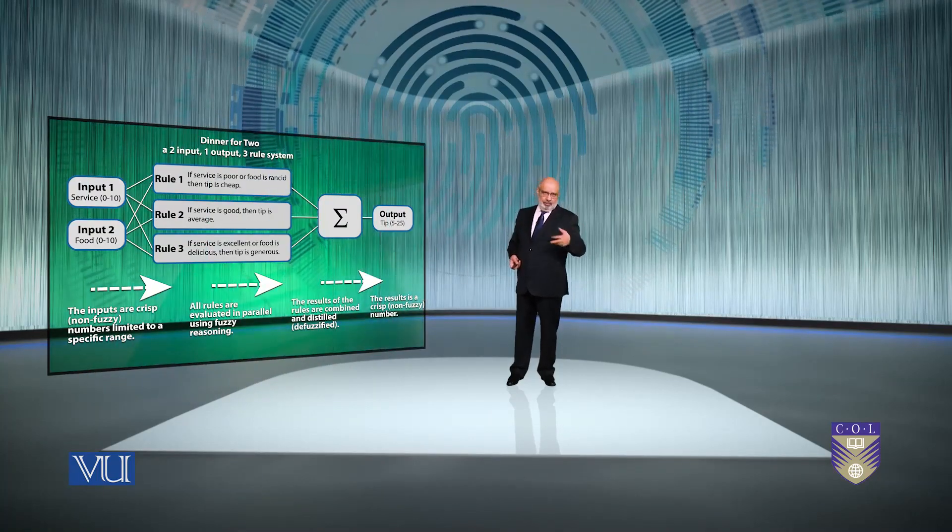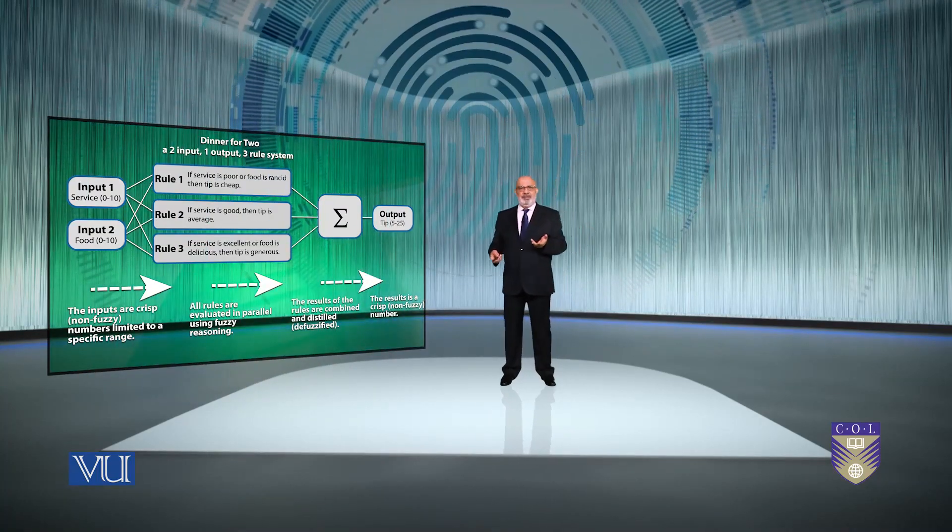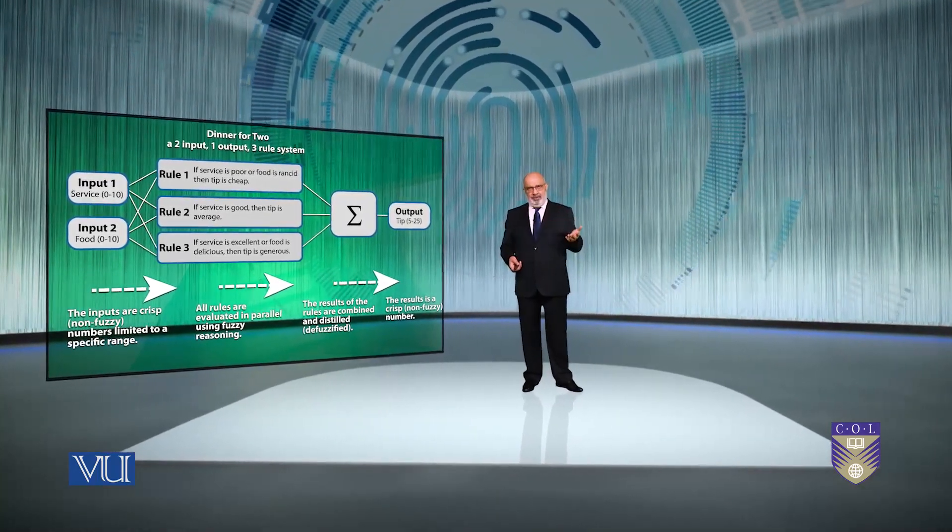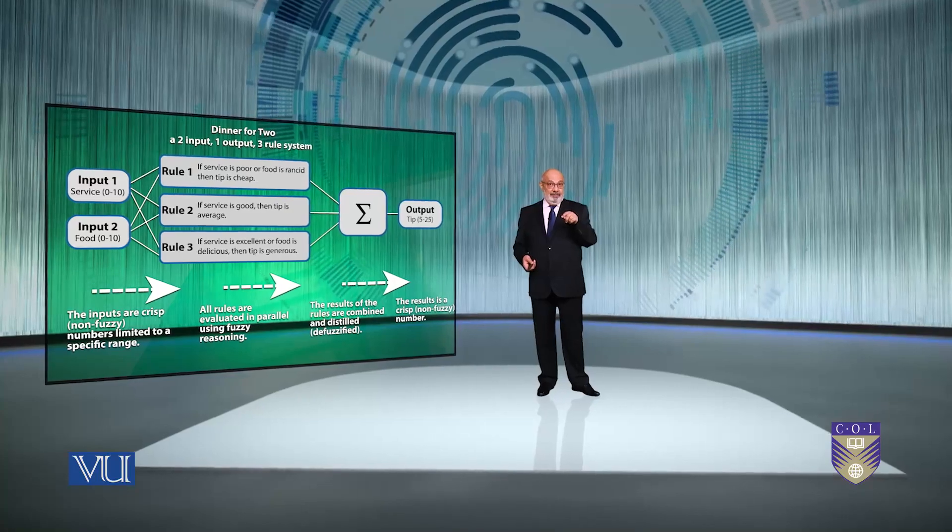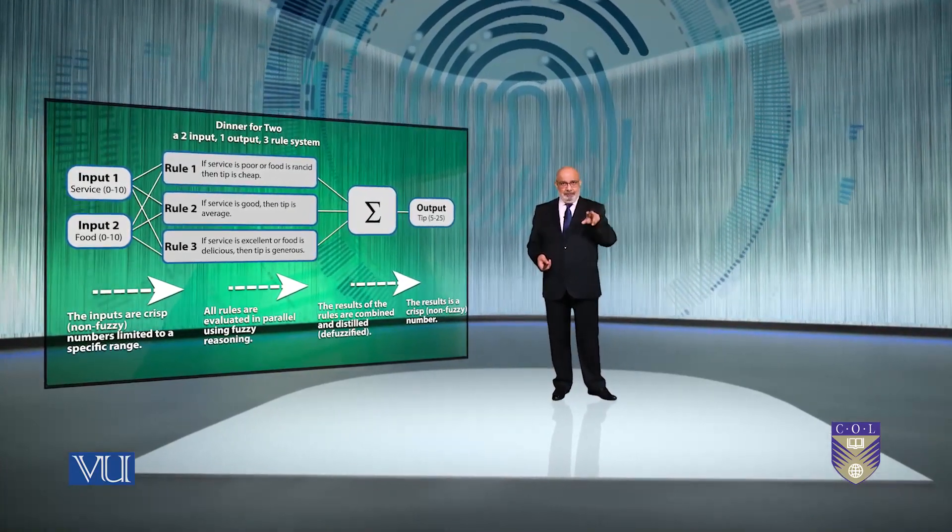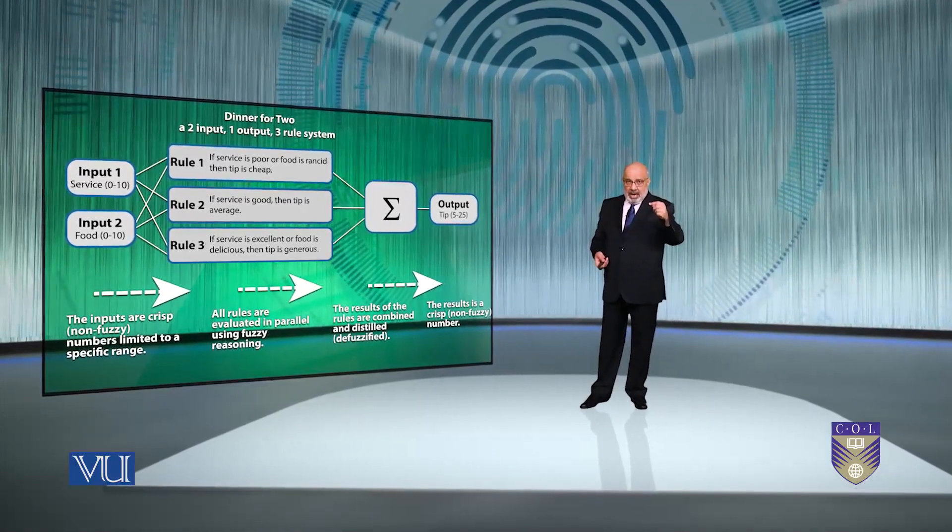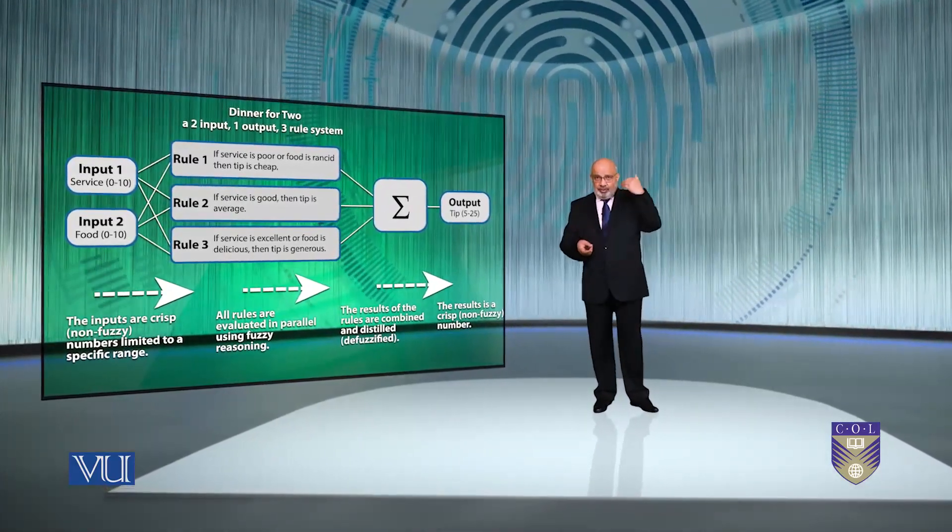So in our case, that we'll discuss, we'll start with the quality of food and the service, two inputs. Rules will be applied, the three of them. So there will be application of that, of each and or whatever. Implication, the effect of each rule, and the aggregation of the consequences across the rules. And finally, defuzzification.